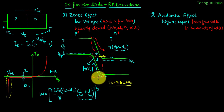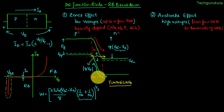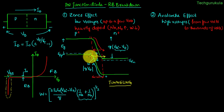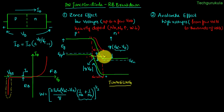This can also be explained another way: because the depletion width is very small, the electric field in the depletion region would be very high at the applied potential difference. Because the electric field is so high, it is capable of rupturing the covalent bonds and pulling these valence band electrons onto the other side where the energy states are empty. This is another way of explaining Zener effect, also called field ionization.